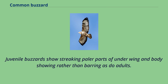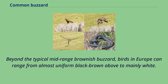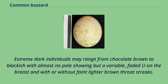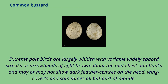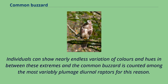Juvenile buzzards show streaking on paler parts of the underwing and body rather than barring as in adults. Beyond the typical mid-range brownish buzzard, birds in Europe can range from almost uniform black-brown above to mainly white. Extreme dark individuals may range from chocolate brown to blackish with almost no pale showing. Extreme pale birds are largely whitish with variable widely spaced streaks or arrowheads of light brown about the mid-chest and flanks. Individuals can show nearly endless variation of colors and hues between these extremes, and the common buzzard is counted among the most variably plumaged diurnal raptors for this reason.